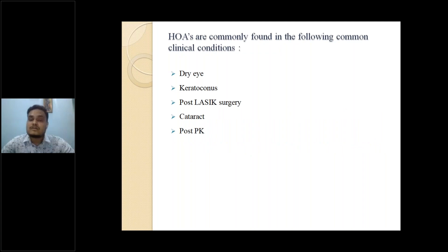The clinical conditions that may have high order aberrations include dry eye, keratoconus, post-LASIK surgery, cataract, and post-PK. Aberration is simply a propagation of the wavefront. When light rays travel from the external medium to the eye, they pass through different optical media: starting from the cornea, then aqueous humor, then the lens, then the vitreous, and then hit the retina. Any kind of change or deformity occurring in these media affects the wavefront.